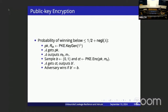An equivalent game-based notion: the adversary gets the public key, chooses messages M0 and M1, gets the encryption of a random one M_b, and tries to guess the hidden bit b. It shouldn't do better than random guessing, which is probability one-half, so we require at most one-half plus negligible.